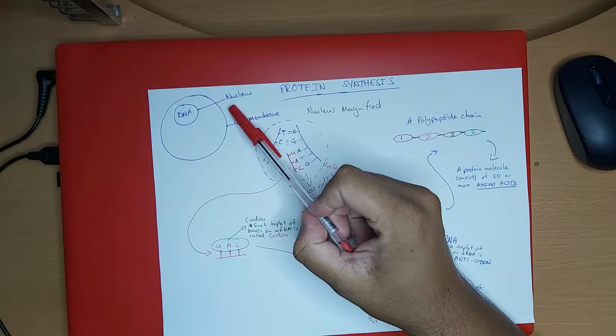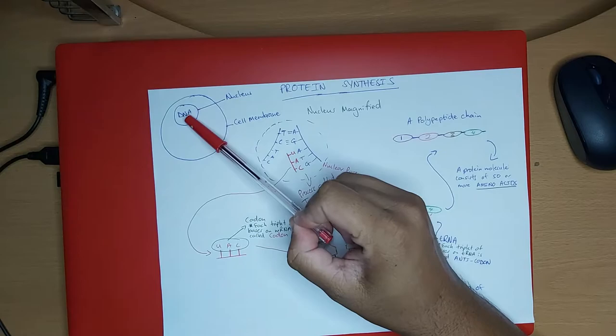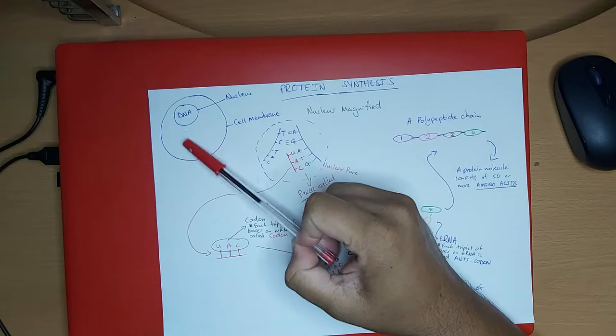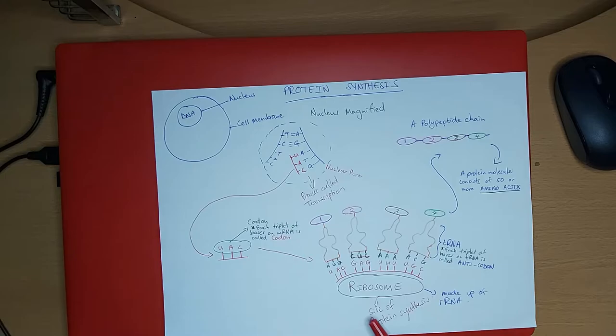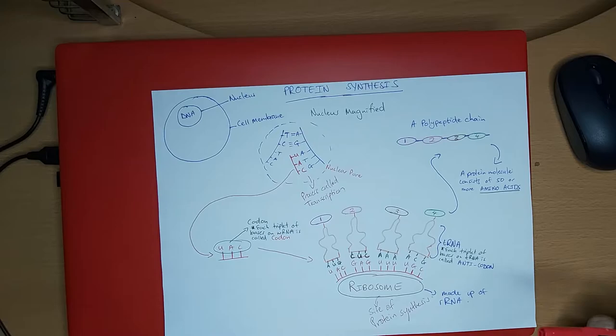So the mRNA has been formed inside the nucleus; it leaves the nucleus and finds the ribosome inside the cytoplasm of the cell. The ribosomes are the site of protein synthesis — this is where the proteins are formed. The proteins that coordinate the functions in your body are manufactured on the ribosomes of your cells.